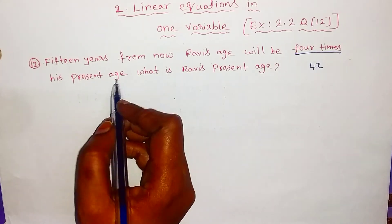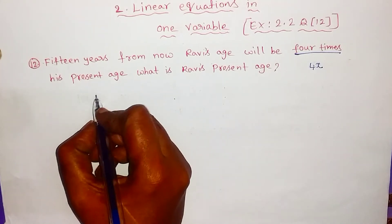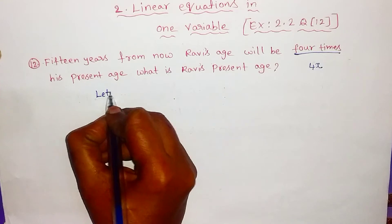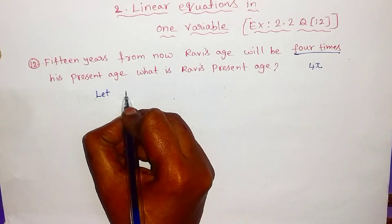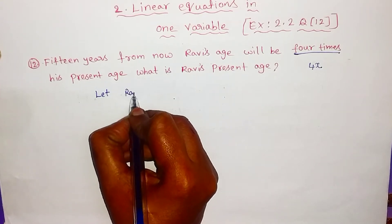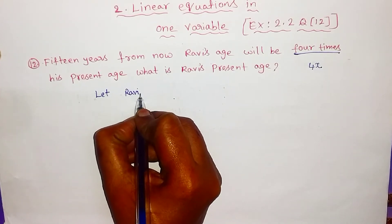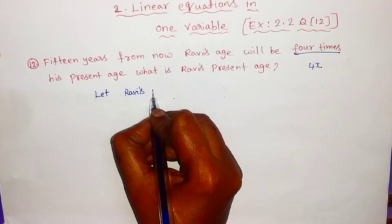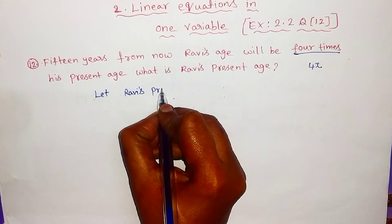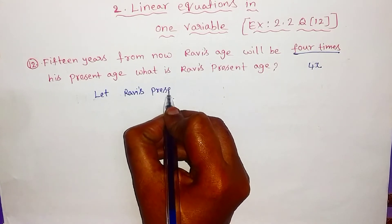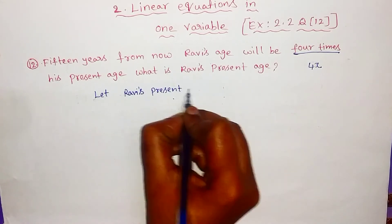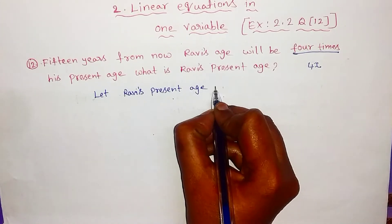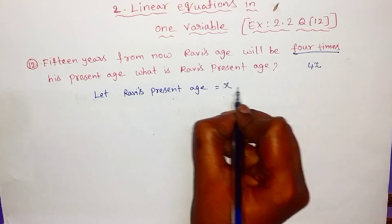Let Ravi's present age be x. Let Ravi's present age is equal to x years.